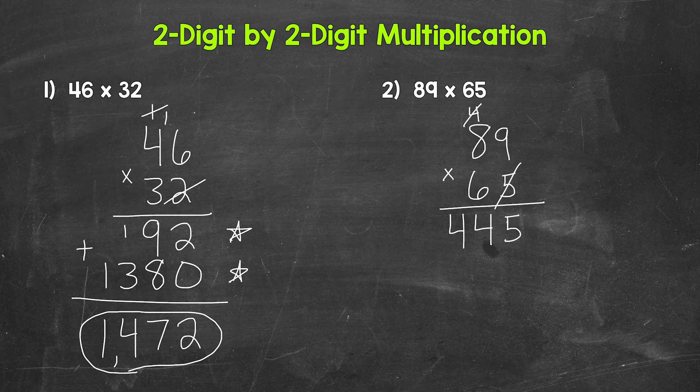Now we move over to the tens place where we have a six. That six has a value of 60, so we need a zero right here, and then we multiply. Six times nine gives us 54, so carry the five. Then six times eight is 48, plus five is 53.